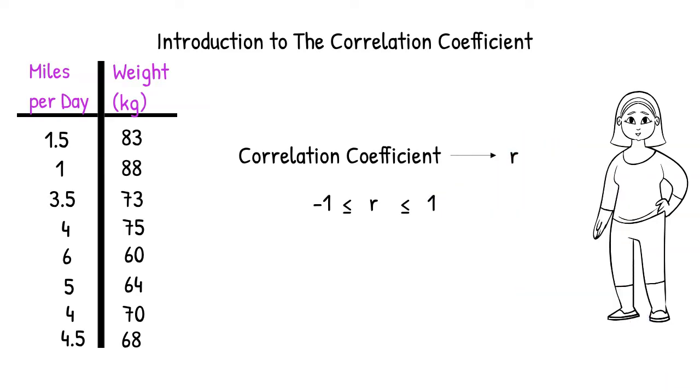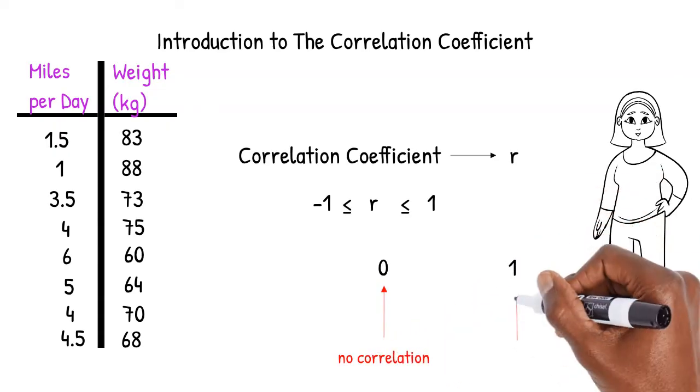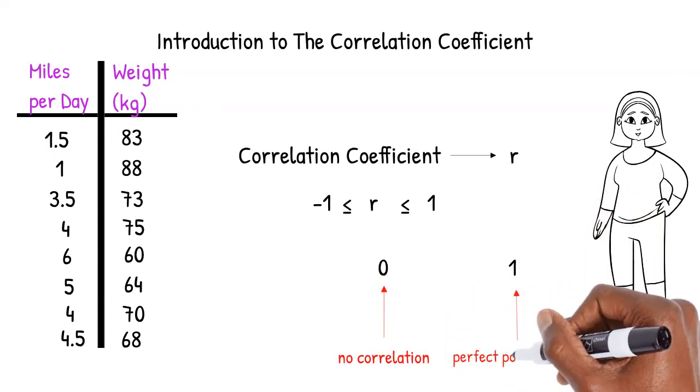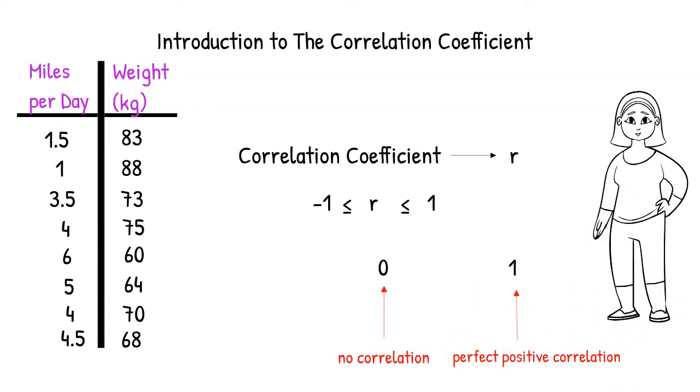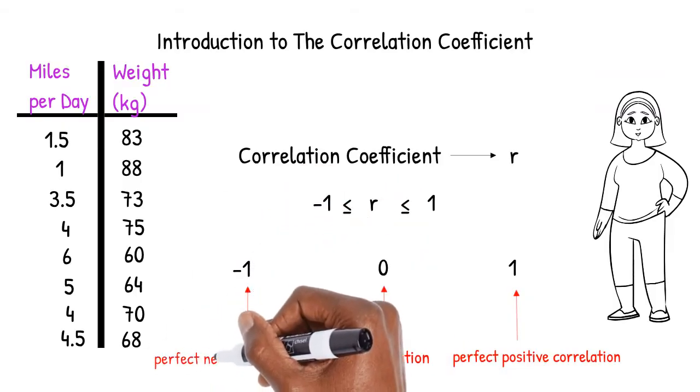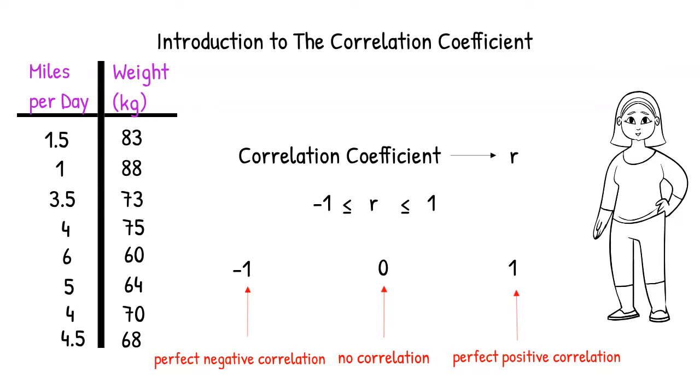If r is equal to 0, there is no correlation. If r is equal to positive 1, there is a perfect positive correlation. If r is equal to negative 1, there is a perfect negative correlation.